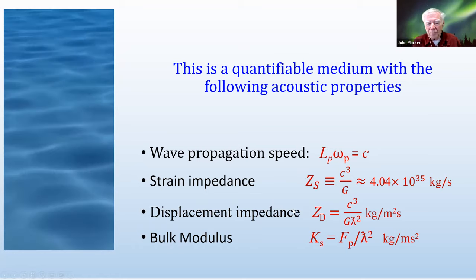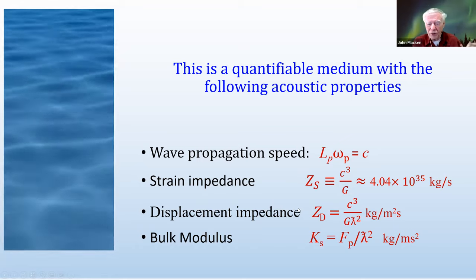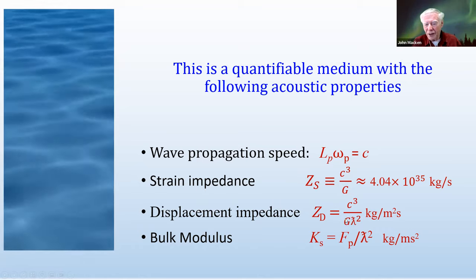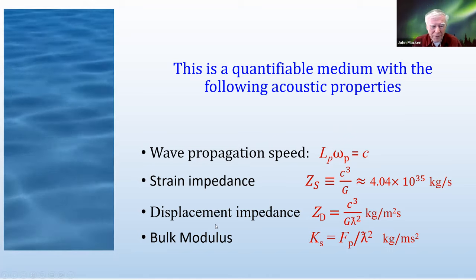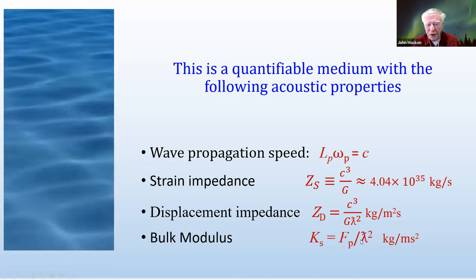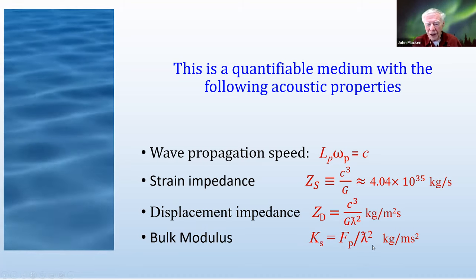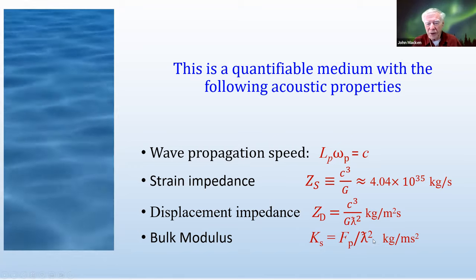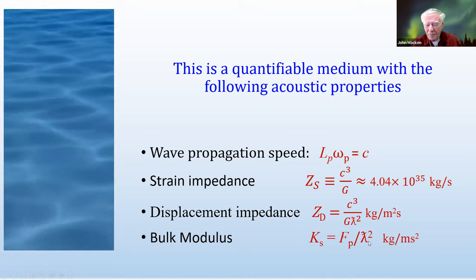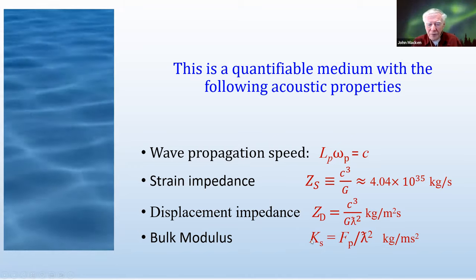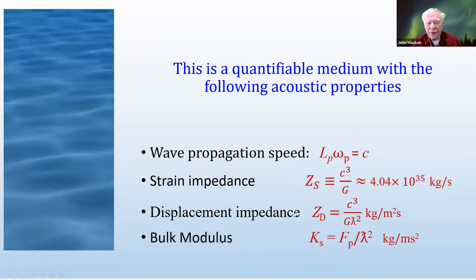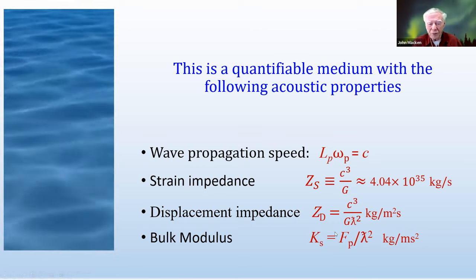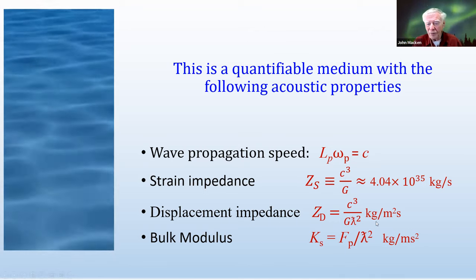The second form is the displacement impedance: if you use Planck length as the amplitude term, the impedance is c³/G divided by λ-bar squared, where λ-bar = λ/2π. There's also a bulk modulus corresponding to the energy density of the medium, but this medium doesn't have a single bulk modulus — it depends on the wavelength you're probing with, giving a wavelength-squared term, analogous to how an inductor's impedance depends on frequency.